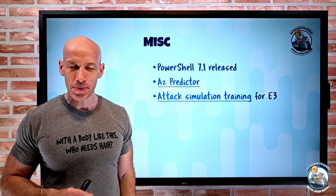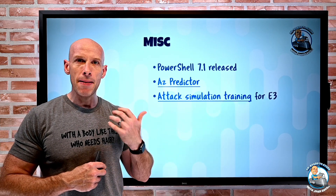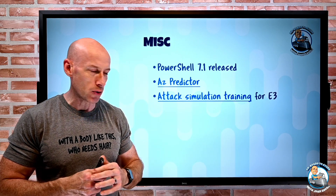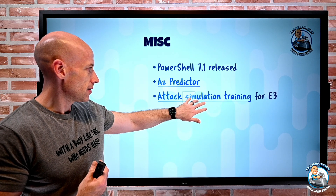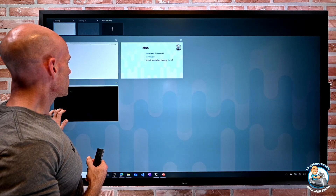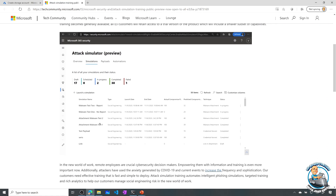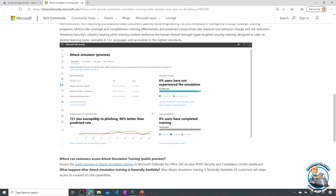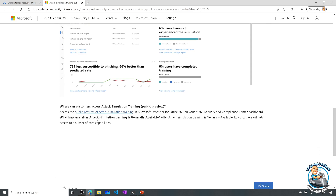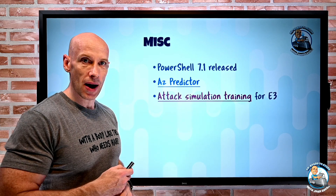Attack Simulation Training — nothing to do with Azure, but pretty cool. If you have E3 or above, this lets you emulate phishing attacks against your users. There's a range of attack types included. You can see how your users would actually react, check how you're performing based on history, and then use that as feedback to help train your users. It's a cool feature you can leverage if you're an E3 or above customer.